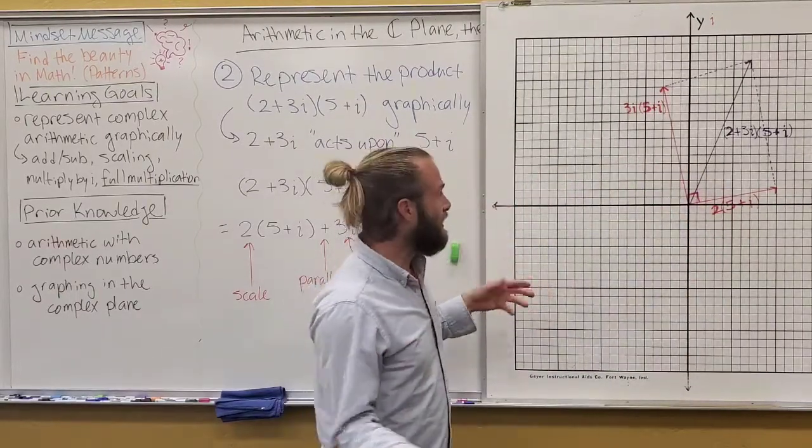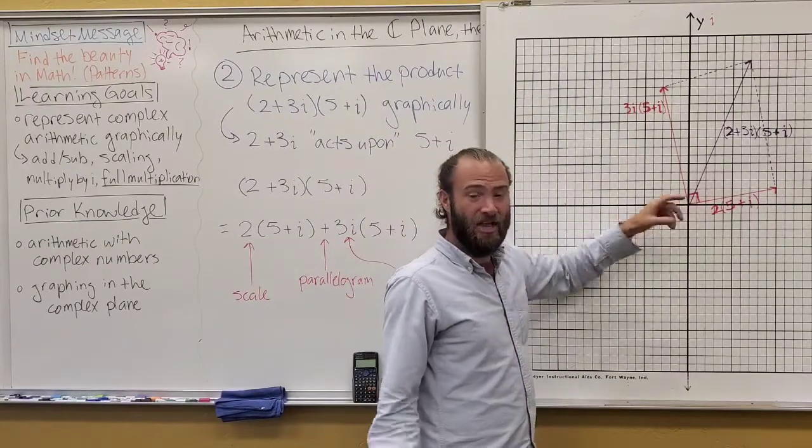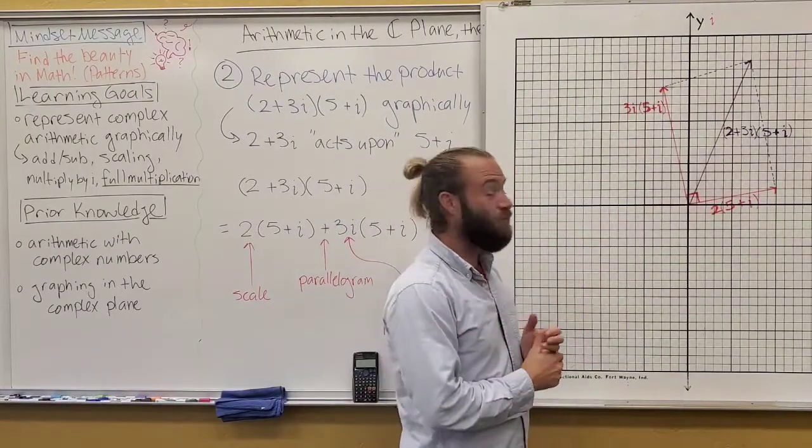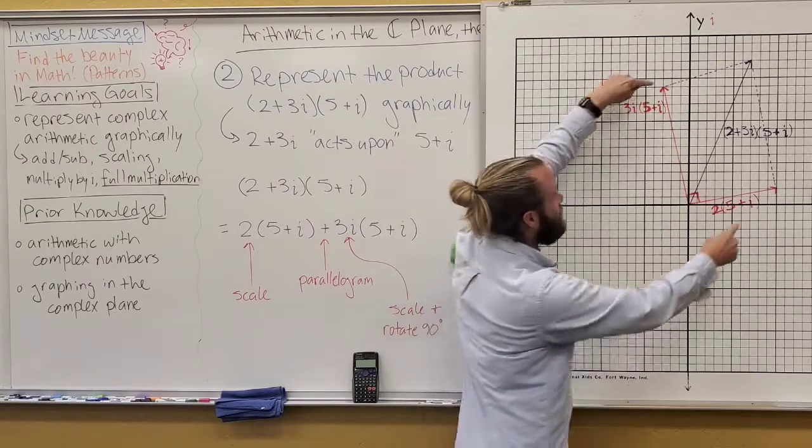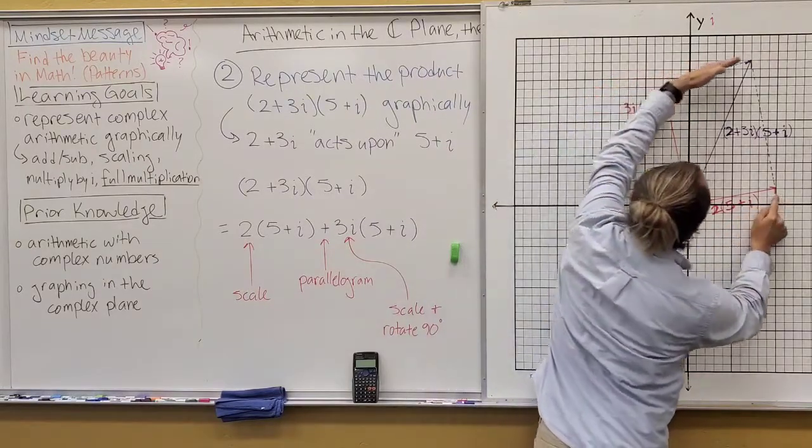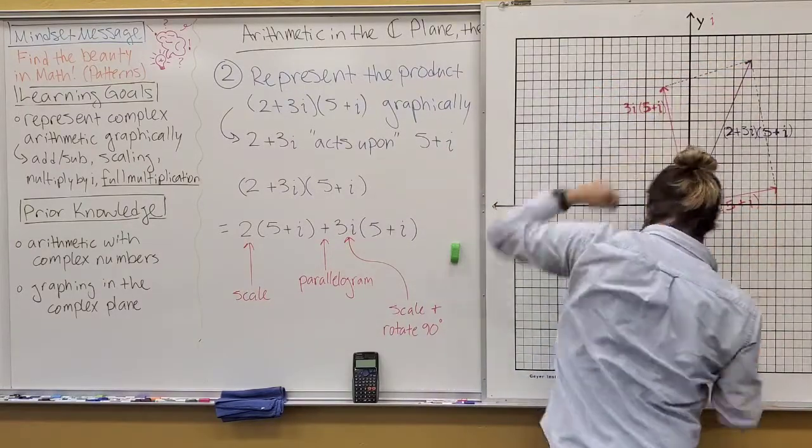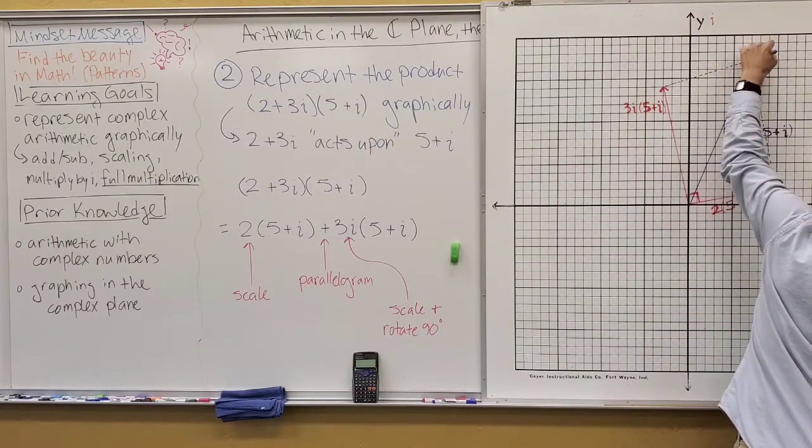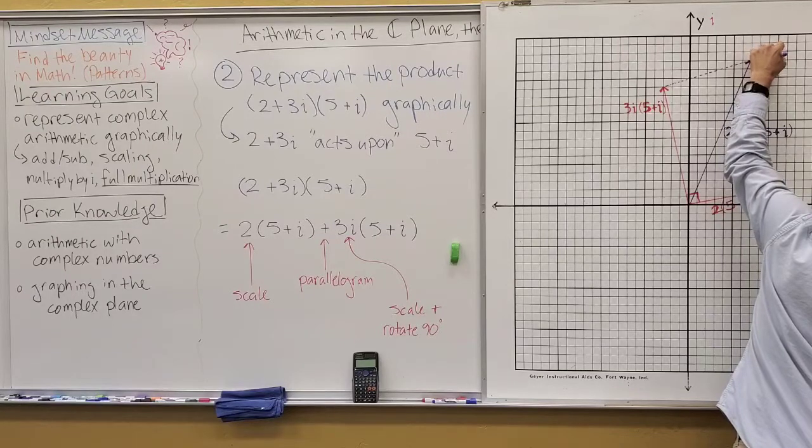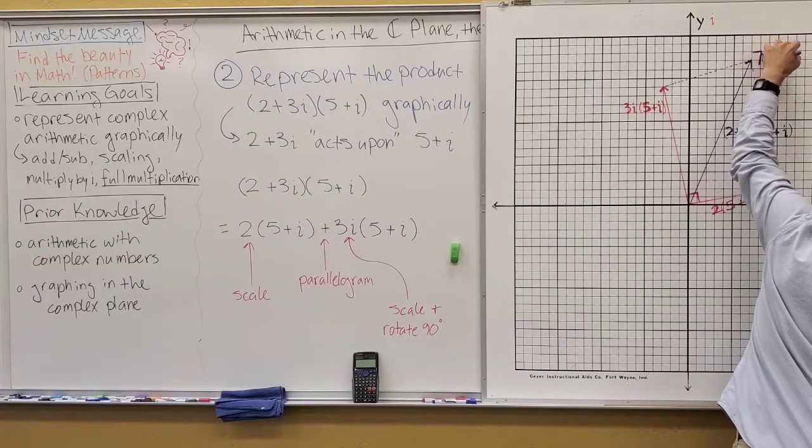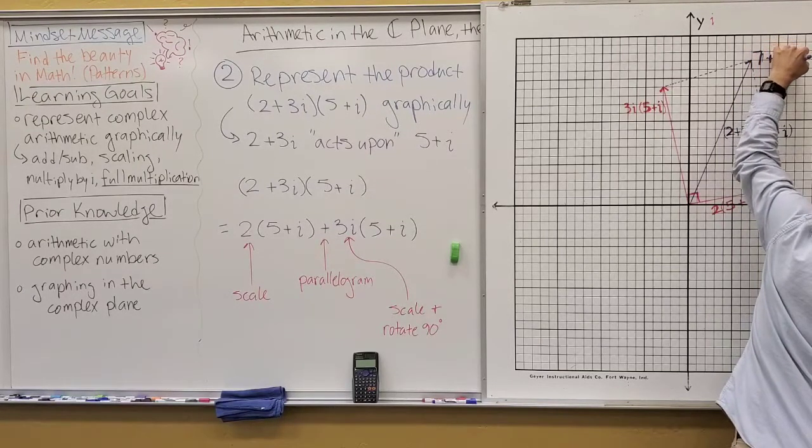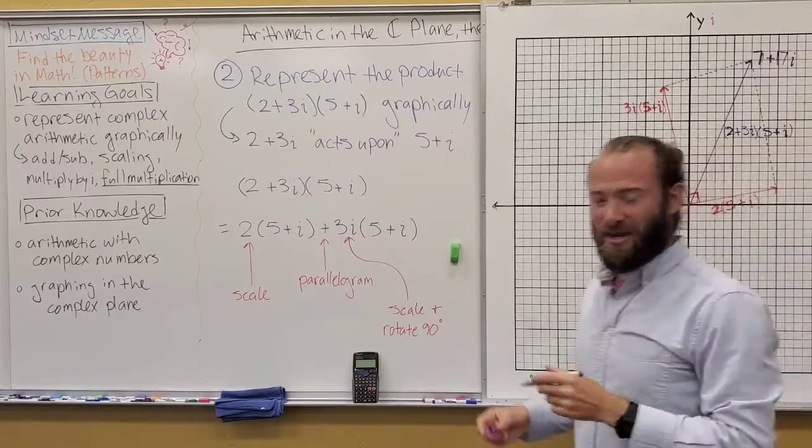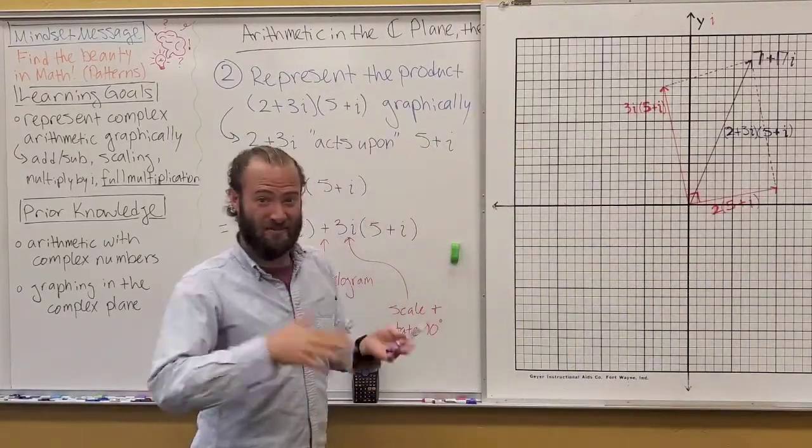And then, here's the awesome thing. This is a 90 degree angle and we have that parallelogram property when we add things, right? So, if we just take these and make them parallel to here, guess where we end up? We end up exactly where we were before at 7 plus 17i. And that's the product that we had gotten a second ago.